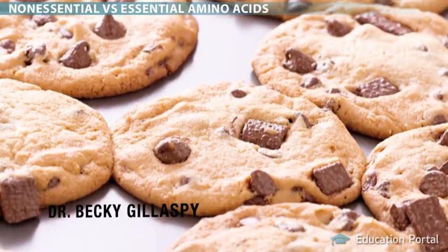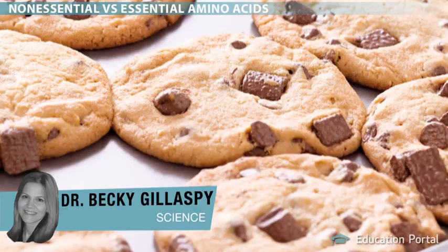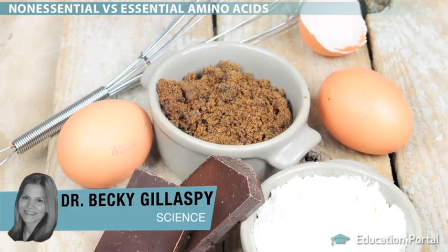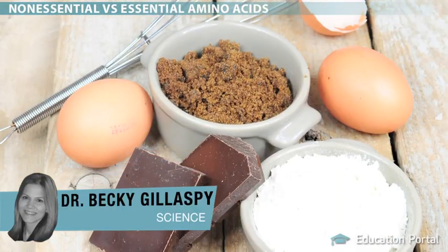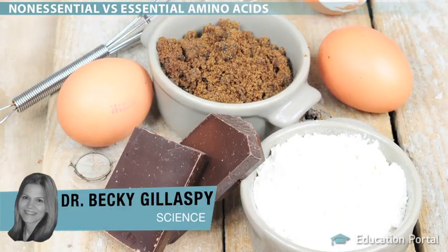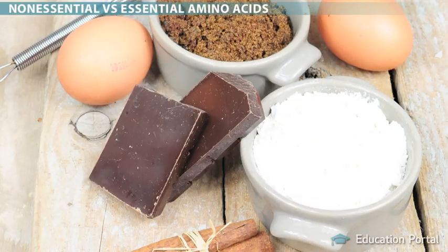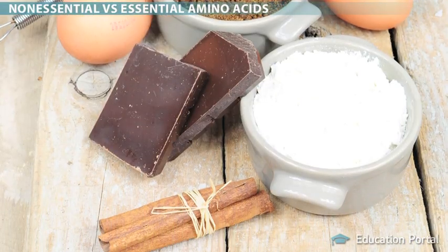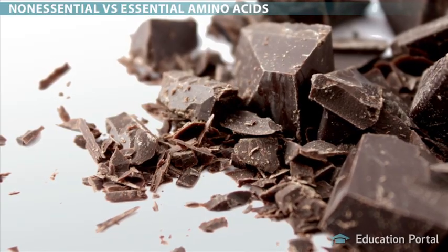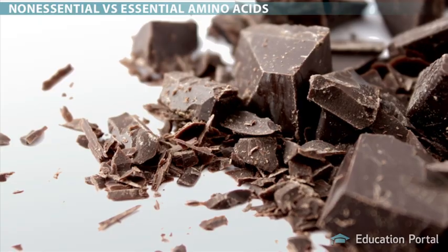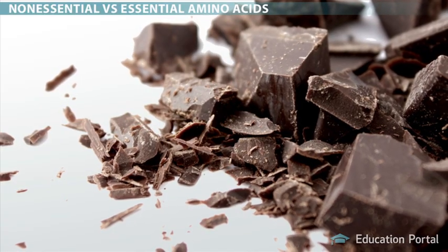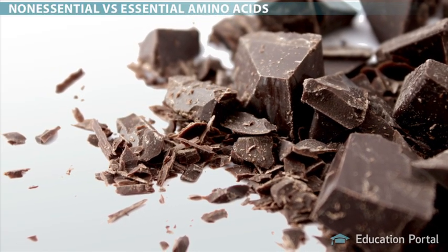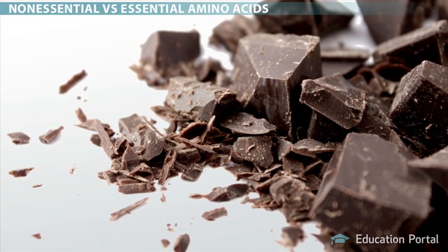Let's say you want to mix up a batch of chocolate chip cookies. I'm betting you already have some of the ingredients stored in your pantry, like sugar, flour, and salt. But what about chocolate chips? If you don't have any chocolate chips in your pantry, then it is essential that you pick up some at the store, or else your cookies will be incomplete.